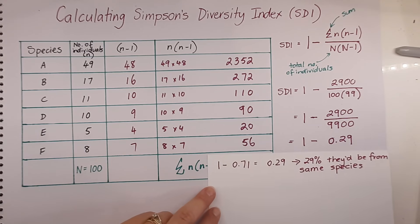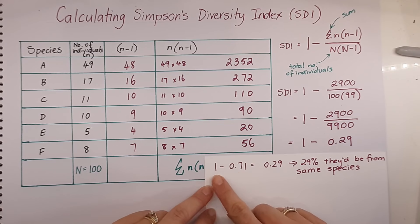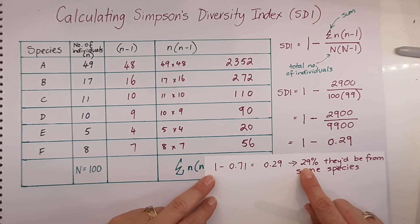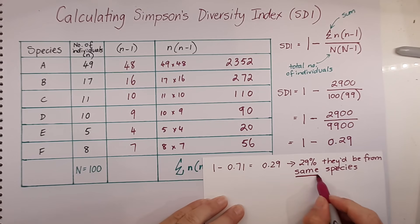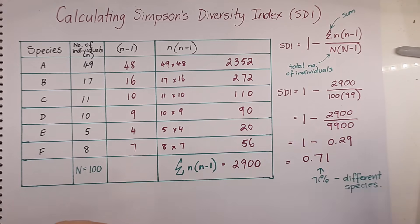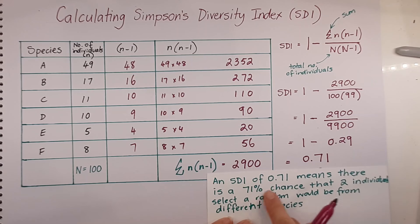If we subtract the Simpson's Diversity Index from 1, that would give us a value of 0.29, which means there's a 29% chance that those two individuals selected at random would be from the same species. So the SDI tells us the chance of the individuals being from different species.